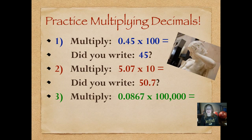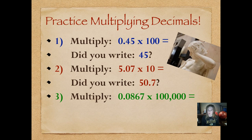Number three: multiply 867 ten-thousandths — you may have to sing the place value song to read that one — times 100,000. Pause and push play when you're ready. Put some thought into this one.